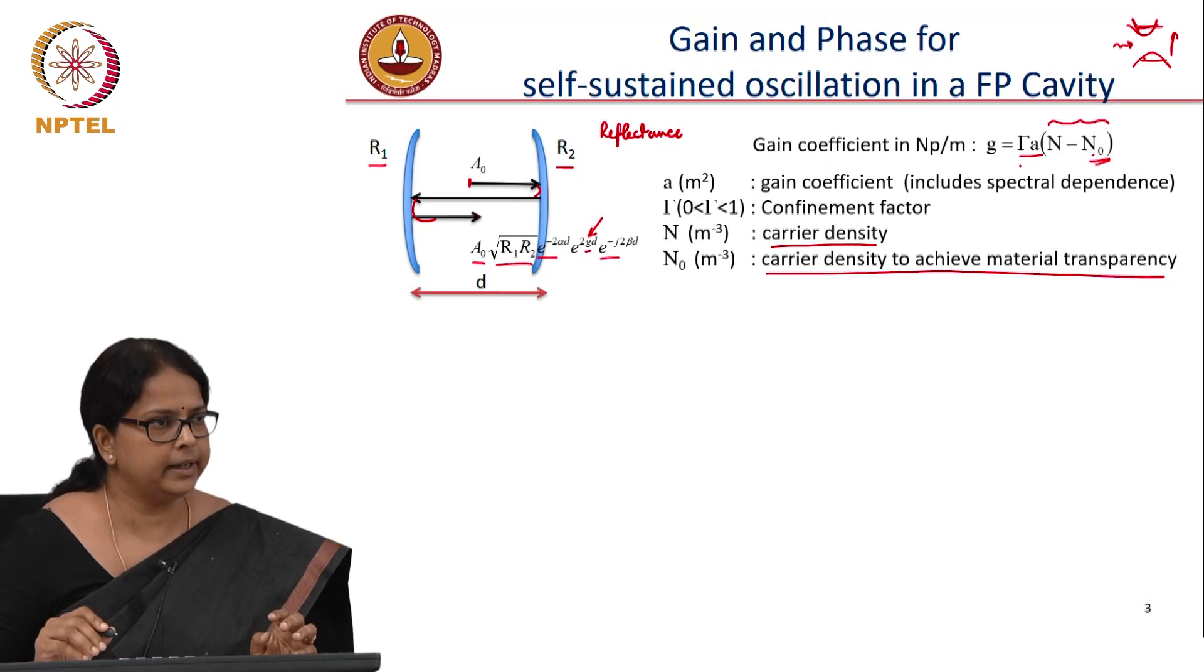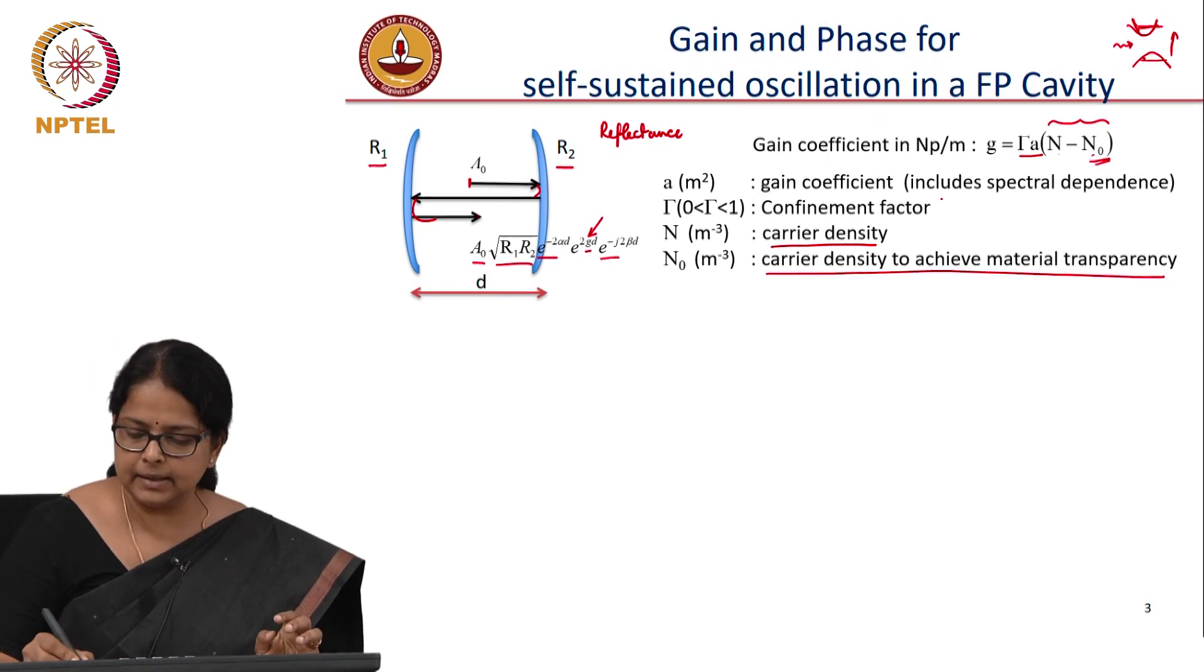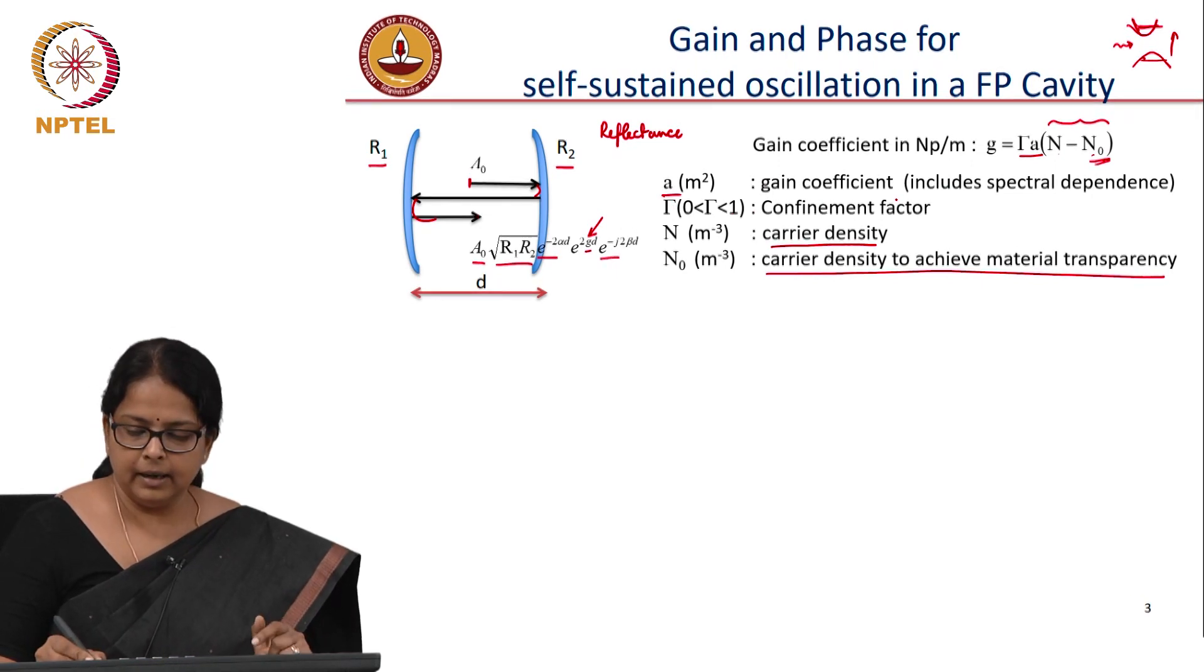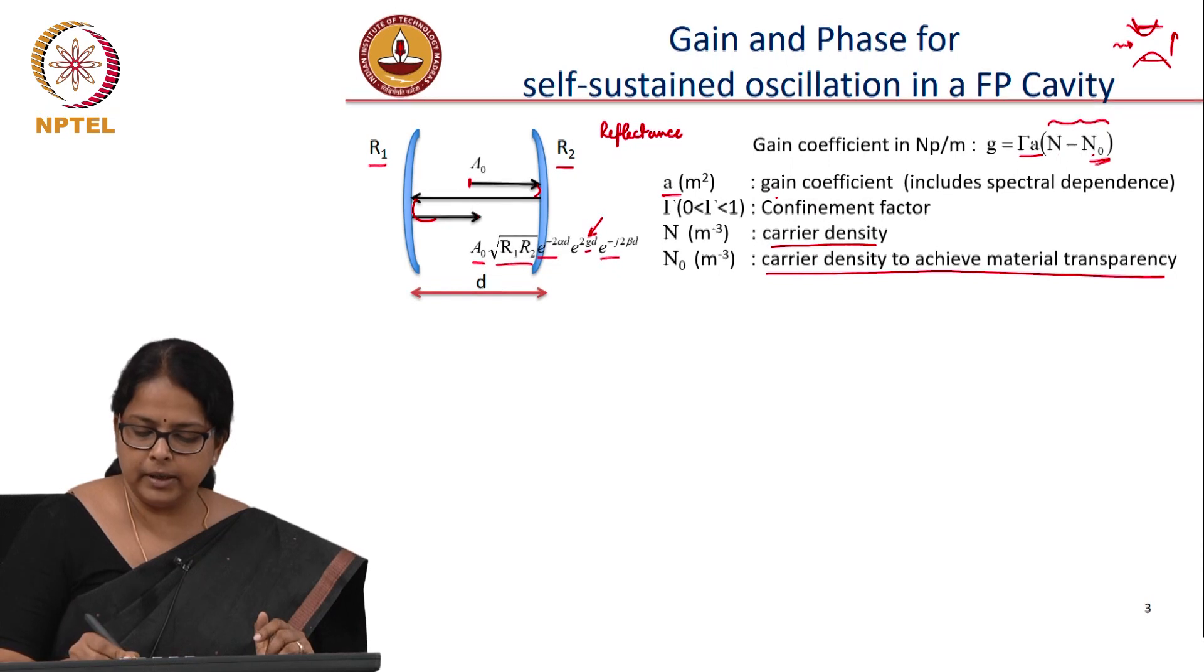So there is a lambda dependence. That lambda dependence is contained in this A. This A is that gain coefficient. So there are two gain coefficients we are defining here.